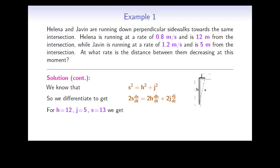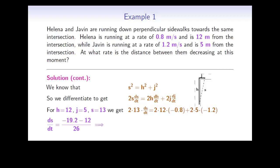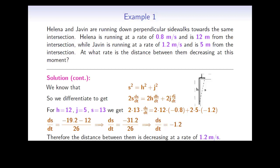We can now substitute in the known quantities: H is 12, J is 5, S is 13, dH/dt is minus 0.8, and dJ/dt is minus 1.2. Solving for dS/dt gives us minus 19.2 minus 12 over 26, or after simplifying, dS/dt is minus 1.2. So we conclude that the distance between them is decreasing at a rate of 1.2 meters per second.